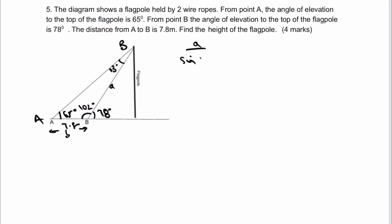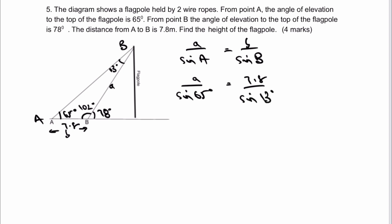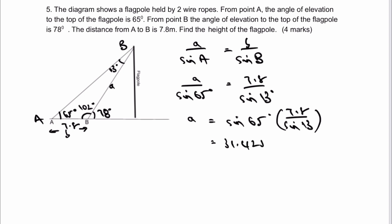Using A over sine A equals B over sine B: A over sine 65 degrees equals 7.8 divided by sine 13 degrees. Making A the subject: A equals sine 65 multiplied by 7.8 divided by sine 13, which gives a value of 31.4255 metres.